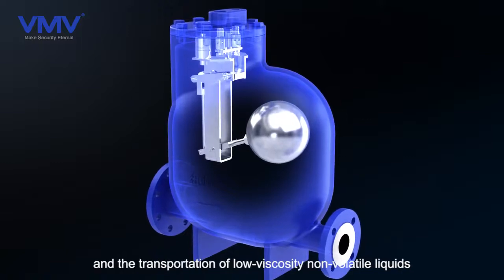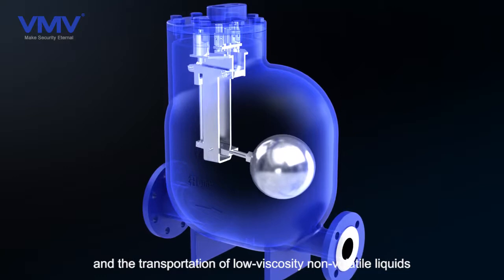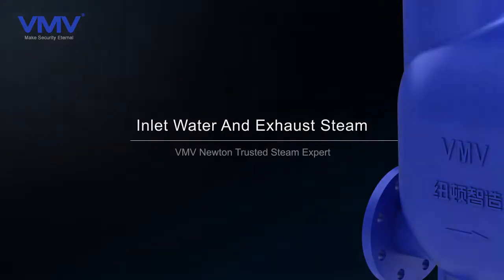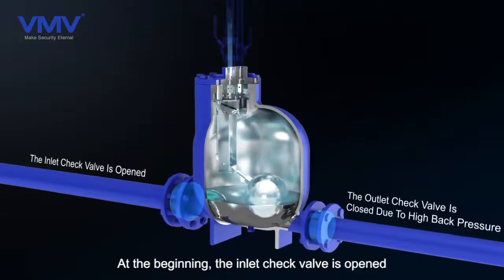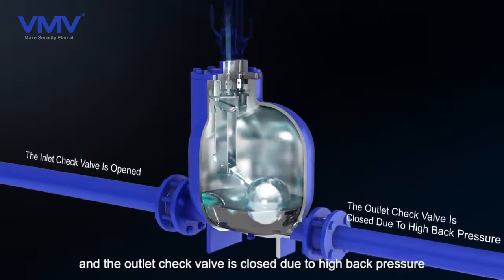Working principle: the pump trap has two strokes, inlet water and exhaust steam. At the beginning, the inlet check valve is open and the outlet check valve is closed due to high back pressure.